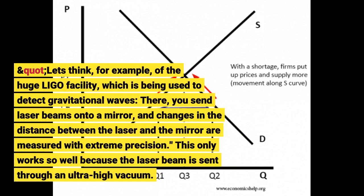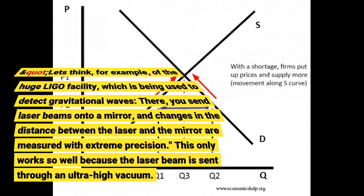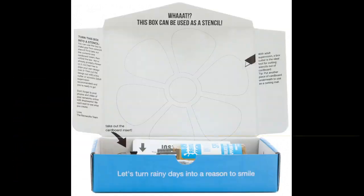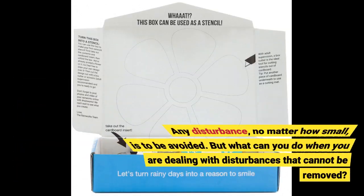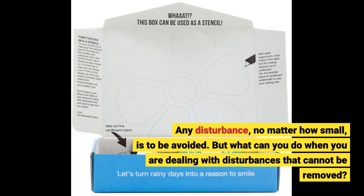There, you send laser beams onto a mirror, and changes in the distance between the laser and the mirror are measured with extreme precision. This only works so well because the laser beam is clean. Any disturbance, no matter how small, is to be avoided.